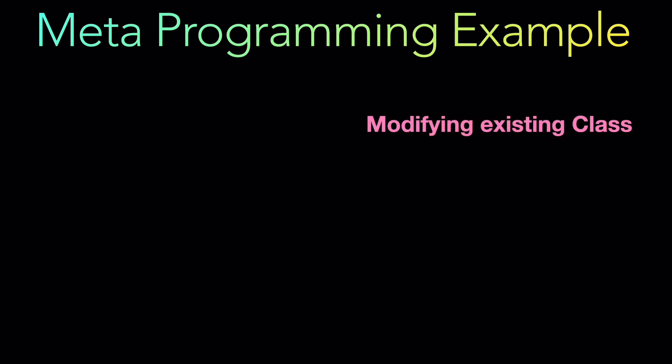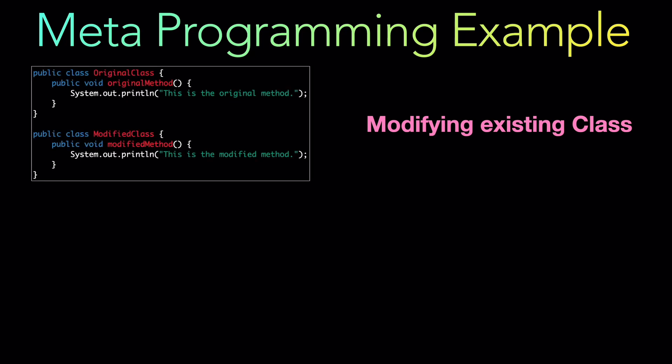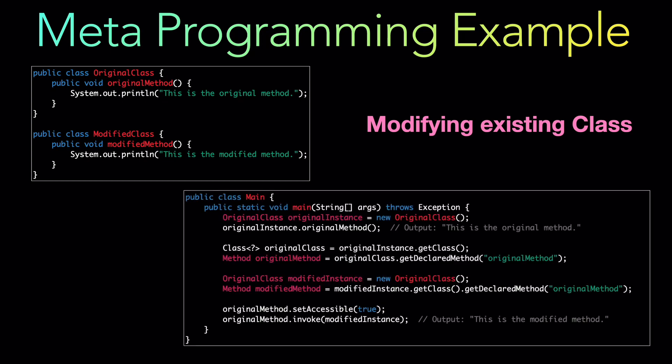The next example is modifying an existing class. In this example, the original class initially has the original method. We use reflection to access and invoke the original method on an instance of the original class. Then we modify the class by creating a new class called modified class with a modified method. Using reflection, we can obtain the original method from the modified class and invoke it, resulting in execution of the modified method. Java's reflection API provides various methods to explore and modify classes, methods, fields, and other elements dynamically, enabling powerful metaprogramming capabilities.